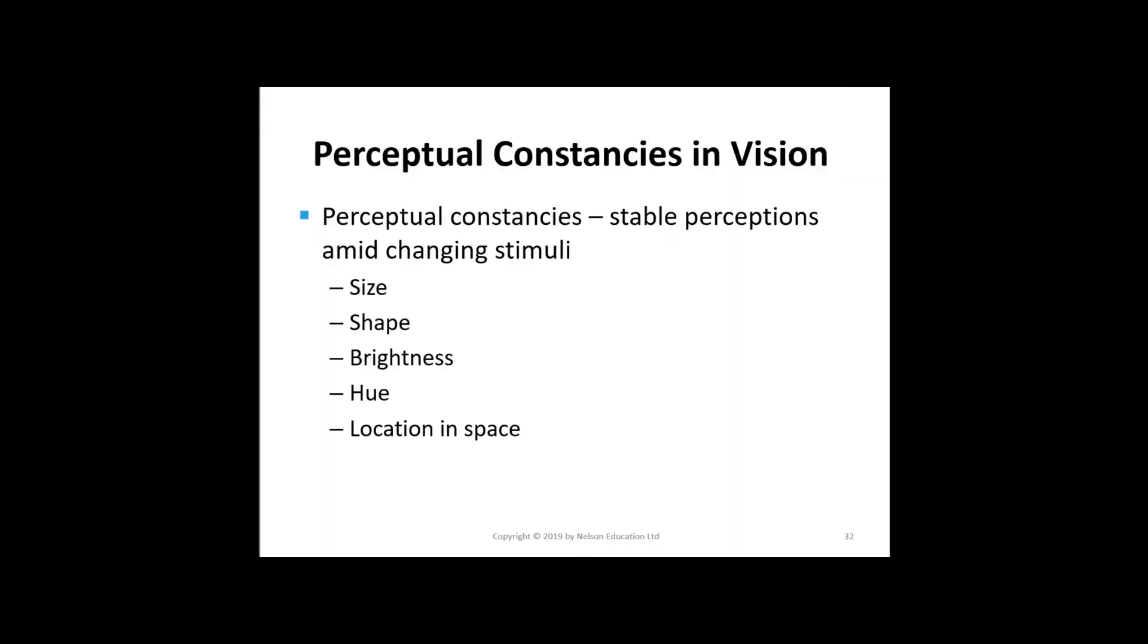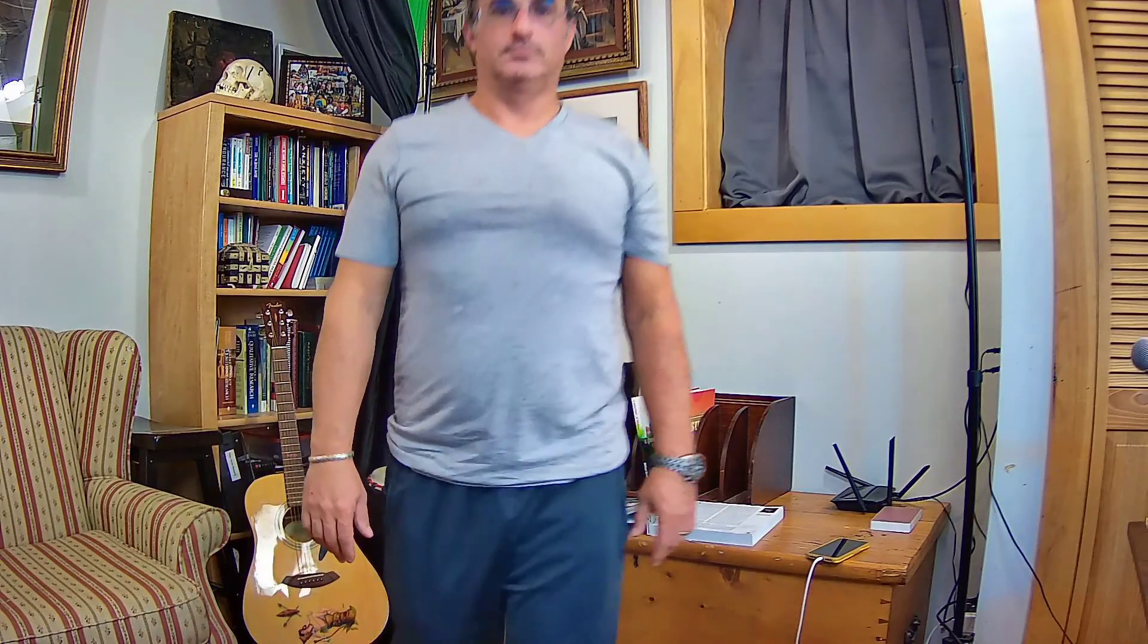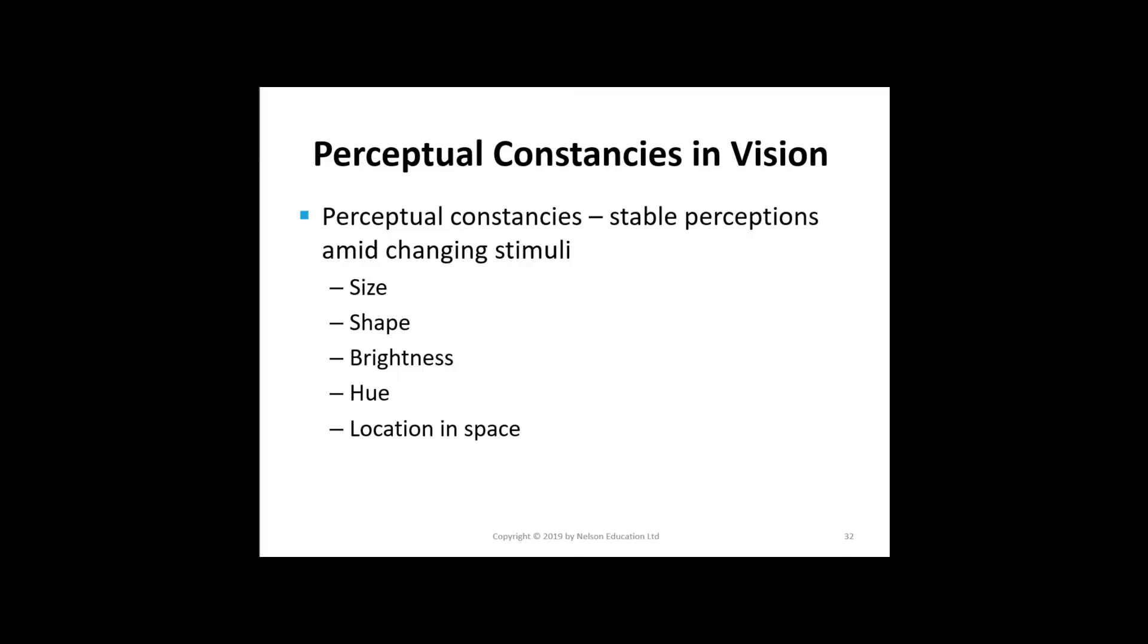Perceptual constancies are tendencies to experience a stable perception in the face of continually changing stimuli. For example, when a person walks towards you, they get larger perceptually. Do you think they're growing? No, of course not. Constancies for shape, size, brightness, hue, and location in space have been shown.